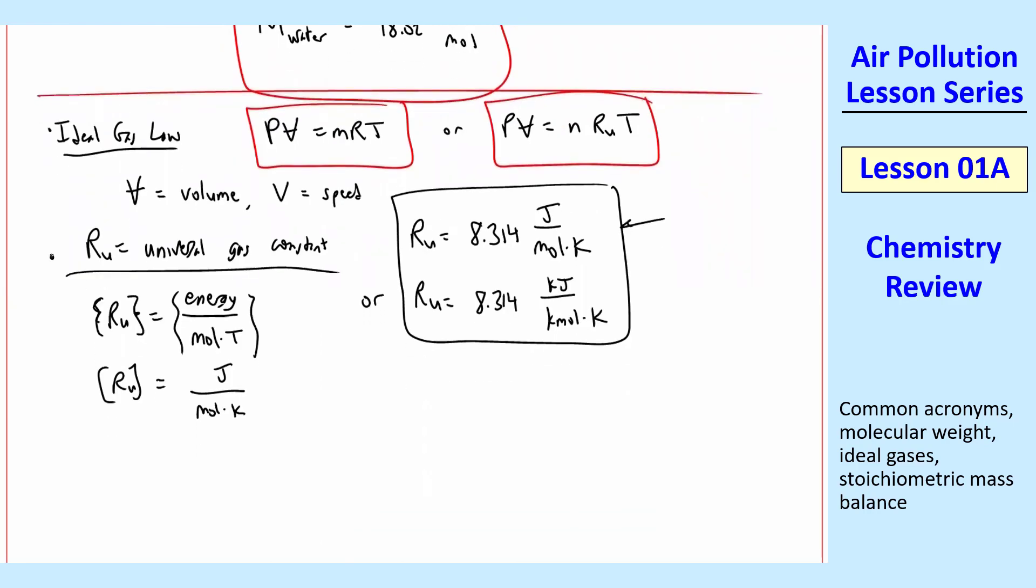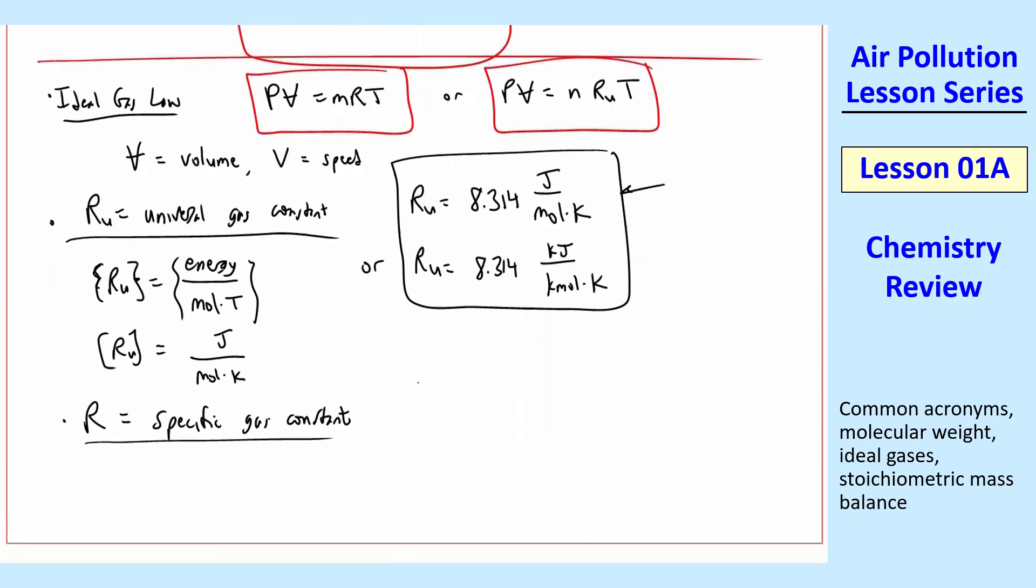And contrast that with R by itself is called the specific gas constant. And this is called specific, you can think of it like thermodynamic specific per unit mass, or you can think of it as for a specific gas or a particular gas. So the difference is the dimensions of R are energy per mass and temperature.